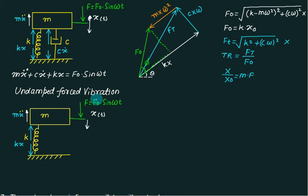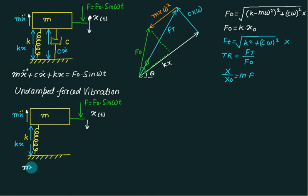Undamped forced vibration. In undamped forced vibration, we have a mass, we have a spring, and one external force acting is F0 into sine of omega d. For this model, what is the governing equation? M x-double-dot plus Kx equals F0 into sine of omega d.